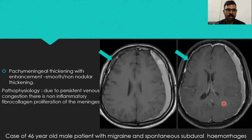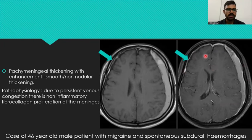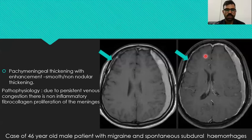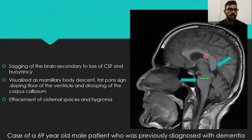Pachymeningeal thickening with enhancement, which could be smooth or non-nodular as depicted here. The pathophysiology is due to persistent venous congestion, resulting in non-inflammatory fibrocollagen proliferation of the meninges. This is shown in a case of a 46-year-old male patient with migraine and spontaneous bilateral subdural hemorrhages.